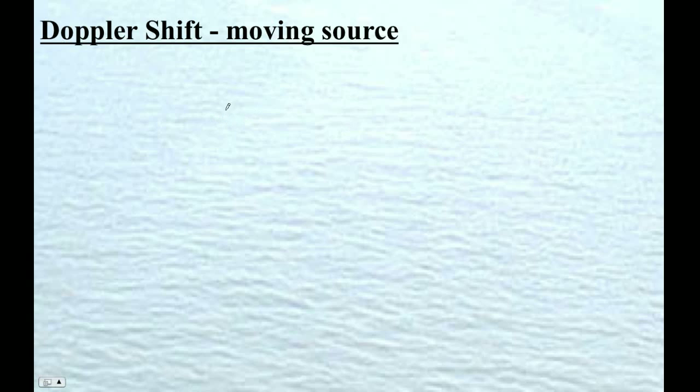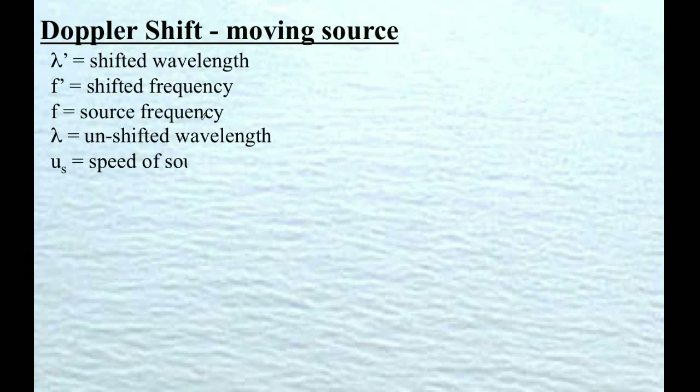So let's make the formula for moving source. Let's talk about what these things are. We've got the speed of sound. So this will be a shifted frequency, that will be the actual frequency, this will be the unshifted wavelength, the speed of the source, the speed of the actual sound. This is like 343 or something like that.